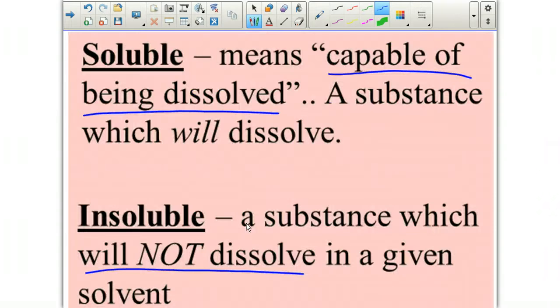First of all, soluble versus insoluble. A substance is considered soluble if it is able to be dissolved. For example, salt in water is an example of a substance that is able to be dissolved. Salt can be dissolved in water.